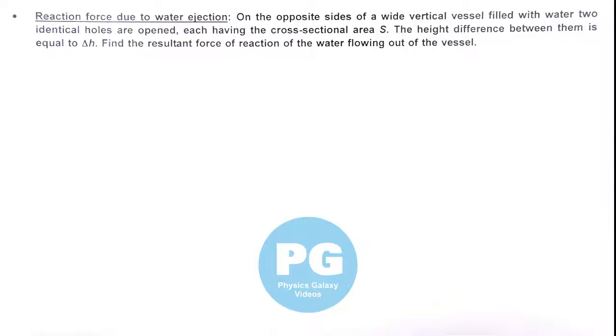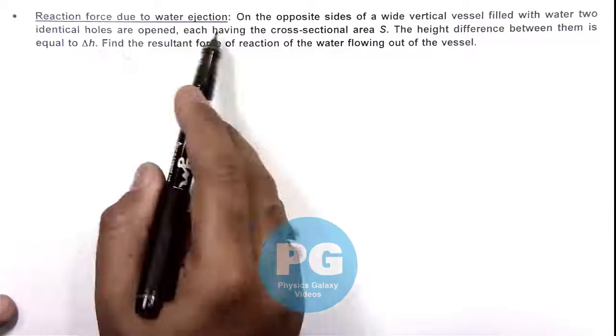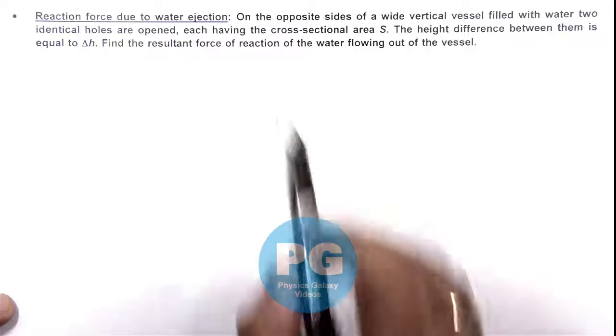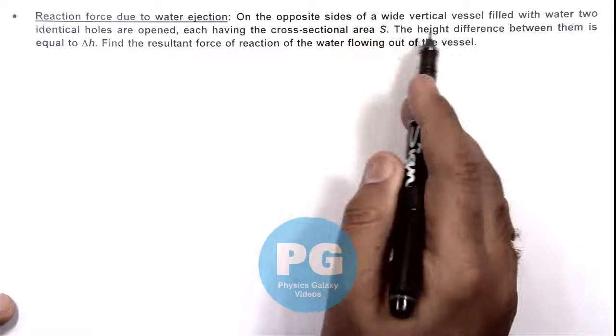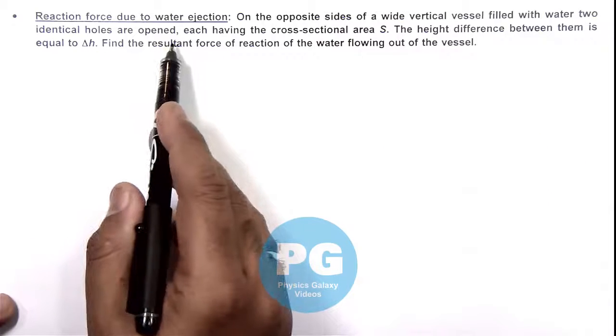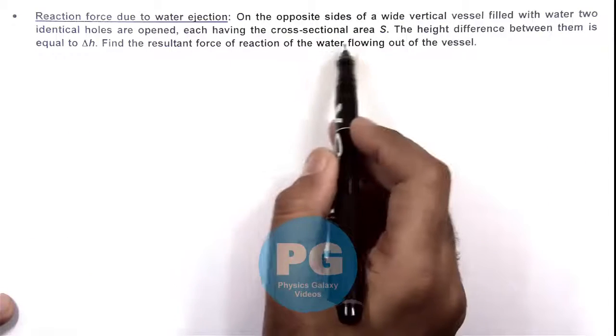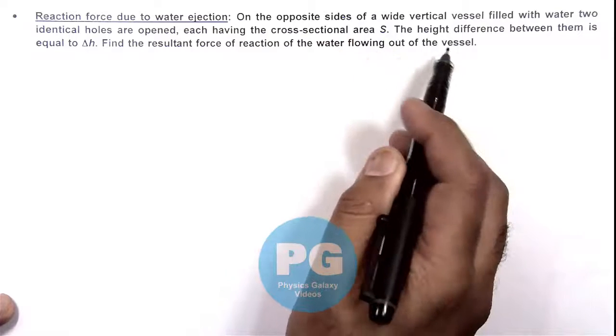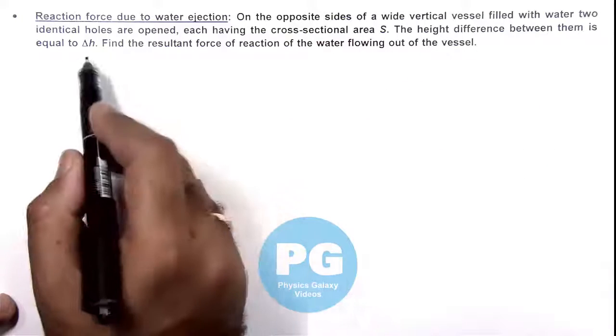In this illustration we will discuss about reaction force due to water ejection. We are given that on the opposite sides of a wide vertical vessel filled with water, two identical holes are opened, each having a cross-sectional area s. The height difference between them is equal to delta h.